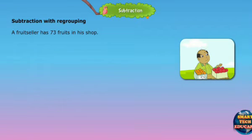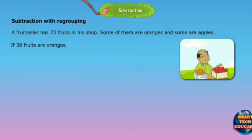Subtraction with regrouping. A fruit seller has 73 fruits in a shop. Some of them are oranges and some are apples. If 38 fruits are oranges, how many apples are there?